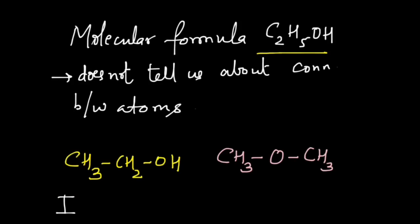So both of them have the same molecular formula but their structures are different and this property is what we call isomerism. Isomerism is the condition or property when two or more compounds have the same molecular formula. So these compounds are known as isomers of each other.